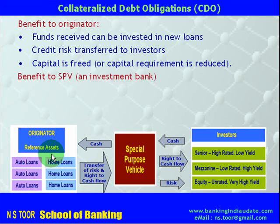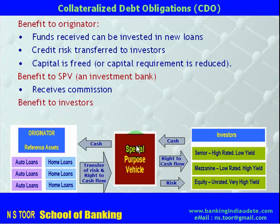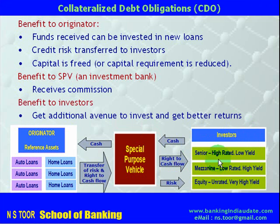The benefit to the special purpose vehicle — which is essentially an investment bank — is that it earns commission through non-fund based or fee based business. The benefit to the investor is that they get an additional avenue to invest and obtain better returns. That is how the CDO functions. Thank you for watching.